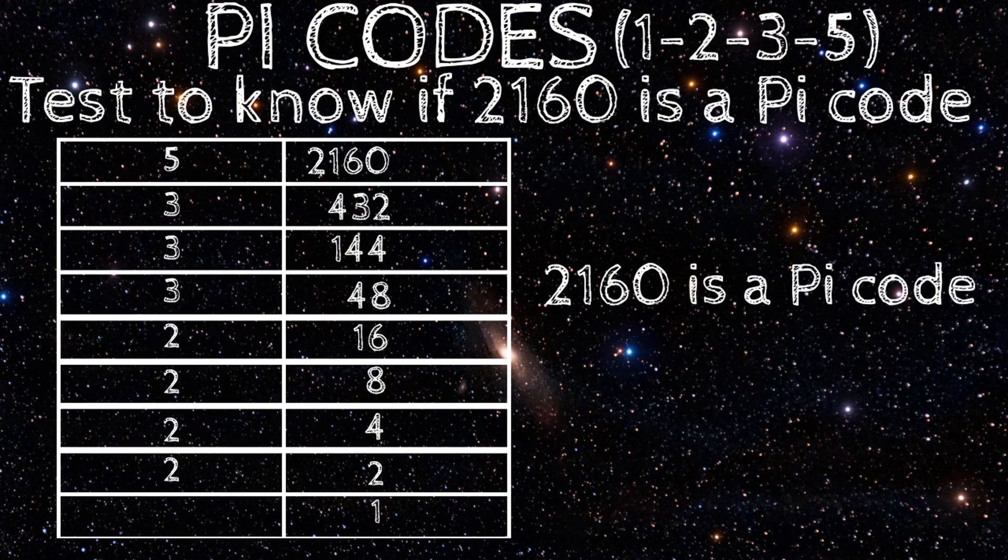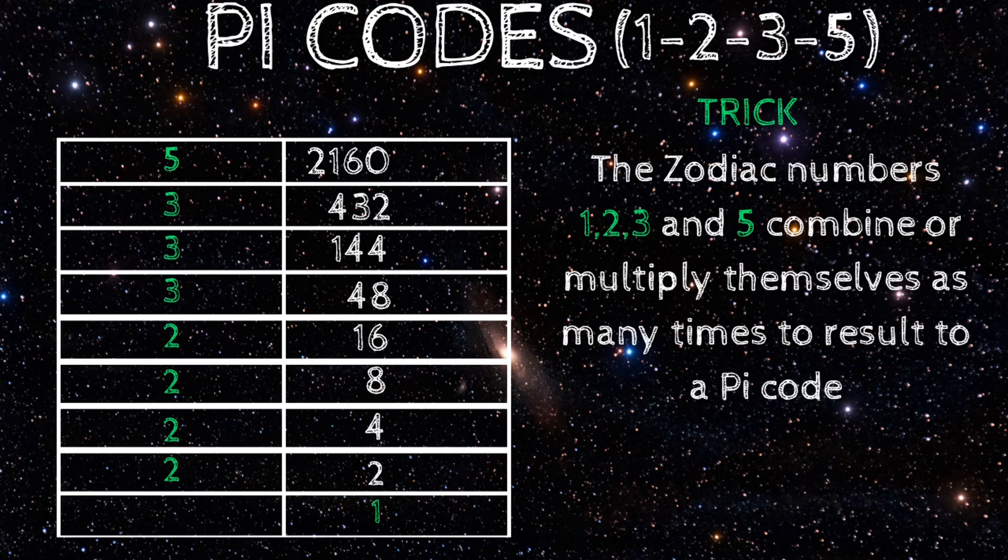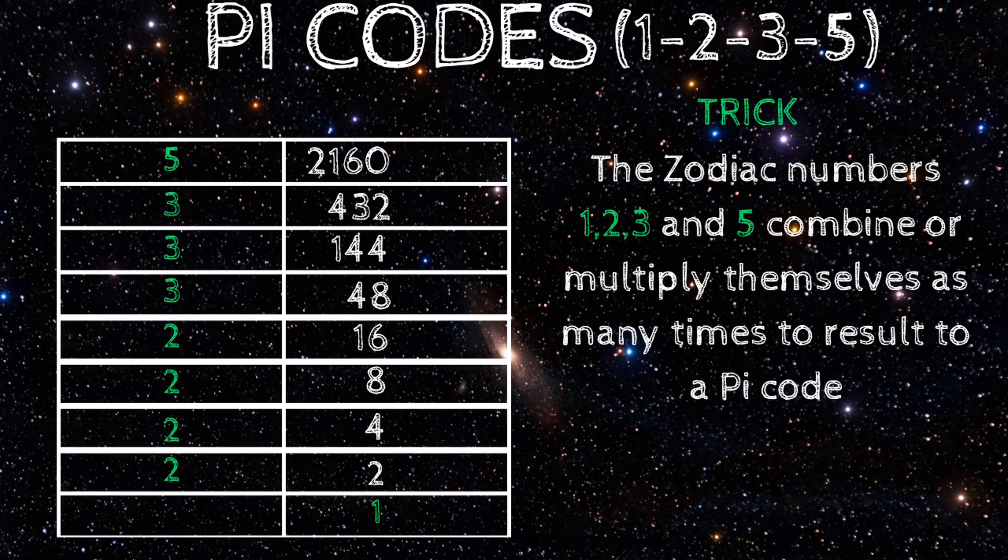And its products 432, 144, 48, 16, 8, 4, and 2 are all pi codes. Now, here's the technique behind this bond. The root pi codes are the four zodiac numbers which are 1, 2, 3, and 5, which will multiply themselves in different combinations to produce more pi codes. That is what you see as the division that has just been done.